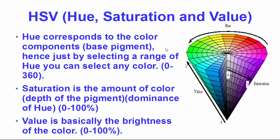HSV is also known as the hex cone color model. This color space can be described using a cylindrical cone model. Hue is the circular angle which varies from 0 to 360, and by selecting a range of hue you can select any color. Different colors appear at different angles — red, yellow, green, cyan, blue, and magenta. Saturation is the amount of color — the depth of pigment or the dominance of hue.